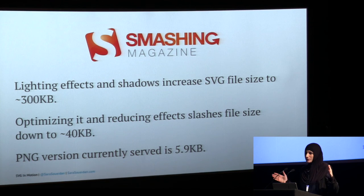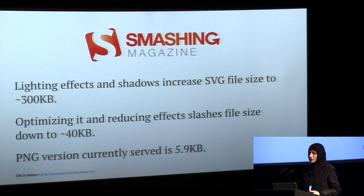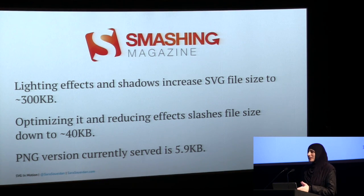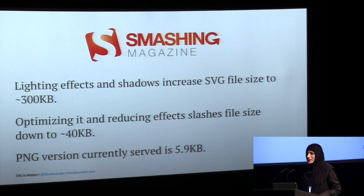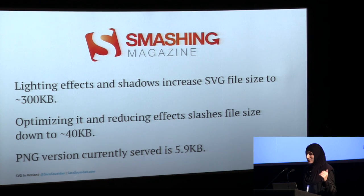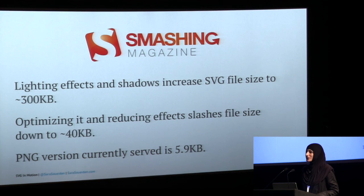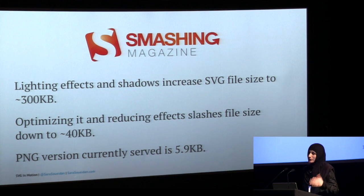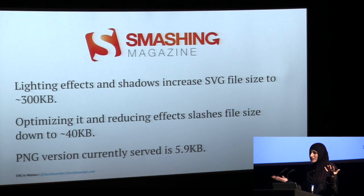An example: I wrote a big chapter for the Smashing Book 5 all about SVG. I wanted the Smashing Magazine logo as a real-life example — it was a perfect SVG candidate. However, when they sent me the Illustrator file, the default SVG file size was 200 kilobytes. After optimizing it, removing lighting effects, drop shadows, and ratings, I still only reduced it to 40 kilobytes. The PNG they're serving is 5.9 kilobytes. So if you have to choose between a 60-kilobyte SVG and a 6-kilobyte PNG, definitely choose the PNG.